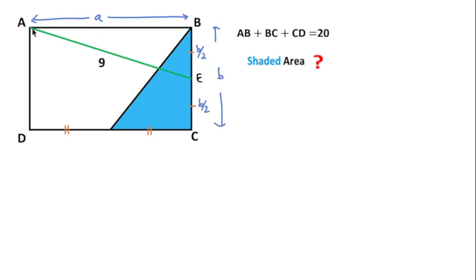Since this is a right angle triangle ABE, we can write by Pythagorean theorem A² + (B/2)² = 9². This means A² + B²/4 = 81.